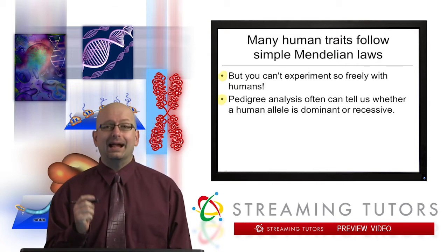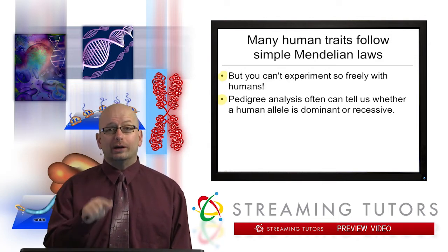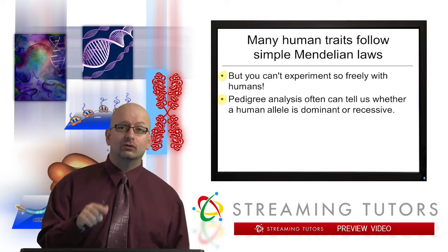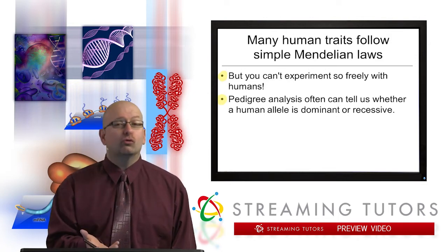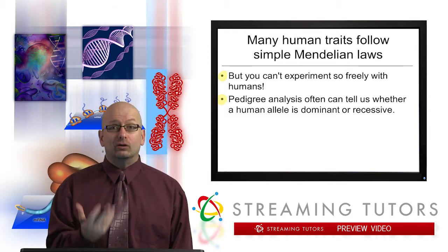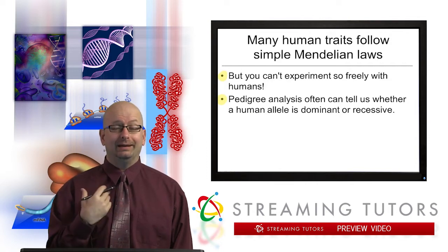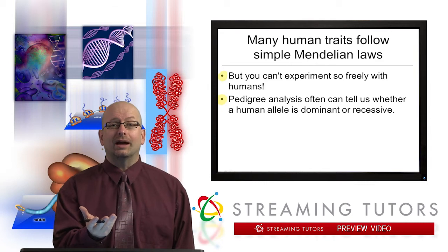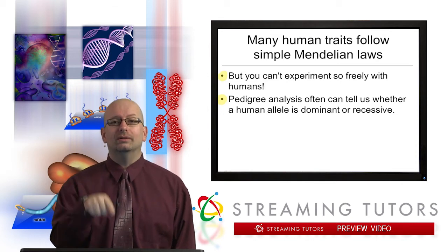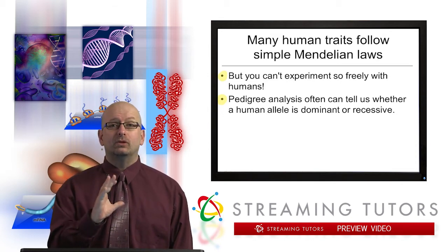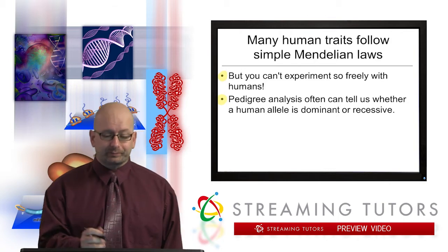We can use what's called pedigree analysis. Really, all a pedigree analysis is is a detailed family history. We're looking back in time at someone's parents, grandparents, cousins, all sorts of things. From that, it's almost as if the experiments have already been done for us in a way. We're looking at historical data, looking back in time, but you can almost pretend: what about these two original people, and they had these kids, and they had those kids.